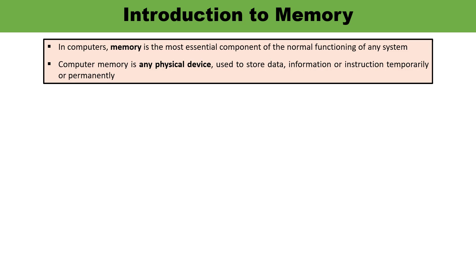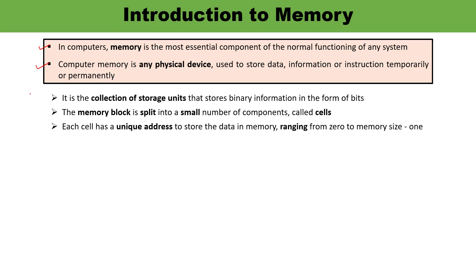When we talk about memory in computers, memory is an essential component required for the normal functioning of the system — it is a kind of physical device. Memory is used to store information, data, and instructions. Information can be stored permanently or temporarily. It is a collection of storage units which store binary information in the form of bits.